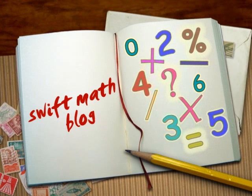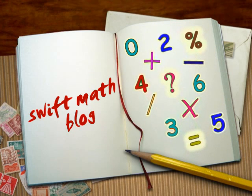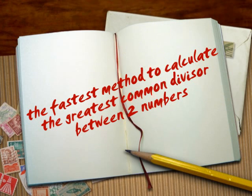Welcome to Swift Math Blog. In this video, I will demonstrate one of the fastest methods to determine the greatest common divisor or the highest common factor between two positive integers. This method dramatically reduces the number of operations required to calculate the greatest common divisor and works well for all kinds of numbers.